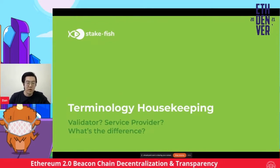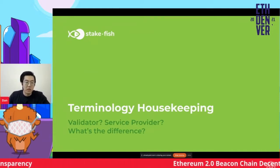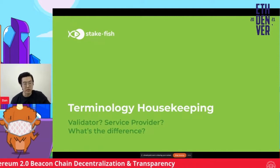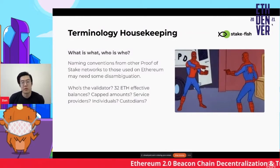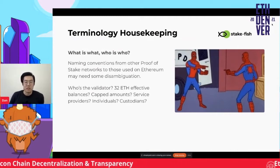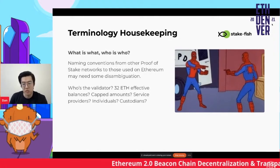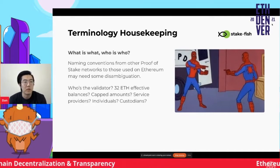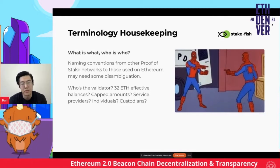I'll go over some terminology, because there is definitely a bit of ambiguity between other proof of stake networks and Ethereum 2, specifically with regards to what a validator is and what a validator is not, and what service providers and independent setups are. With other proof of stake networks, validators are basically like the miners of proof of stake — they accept delegations on your behalf, and delegation amounts on those different networks are uncapped. You can basically send as many tokens as you want to a validator service provider.